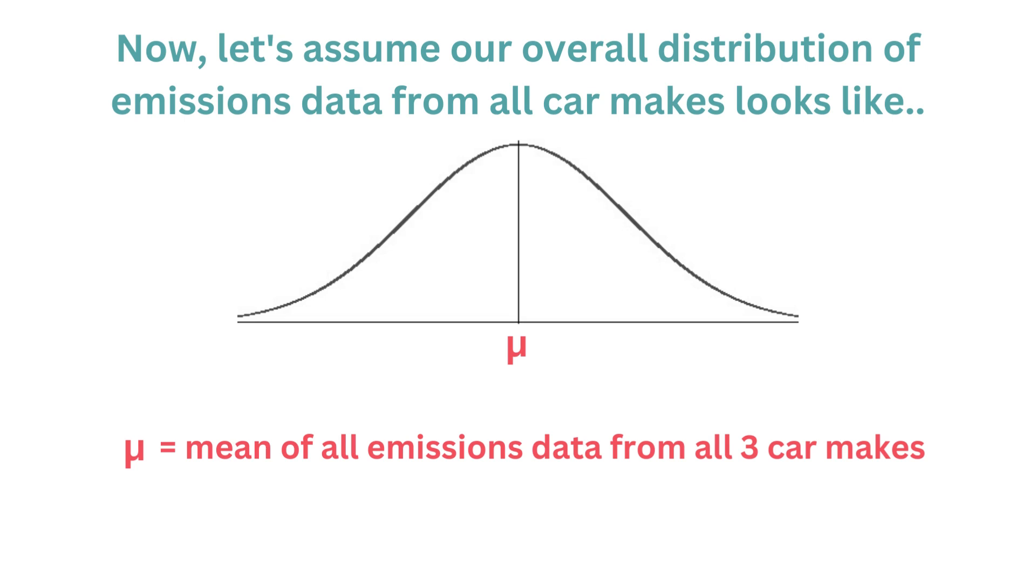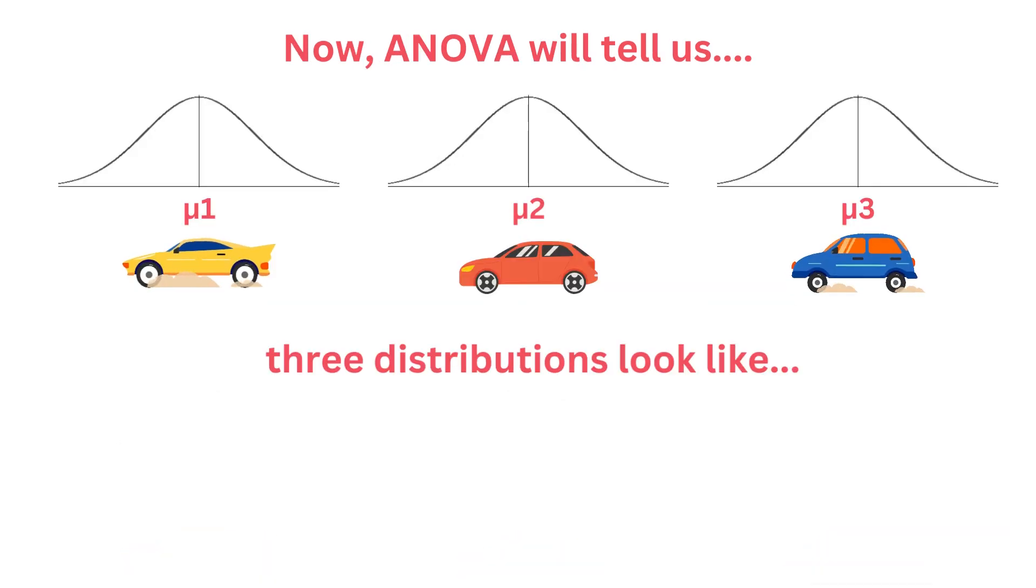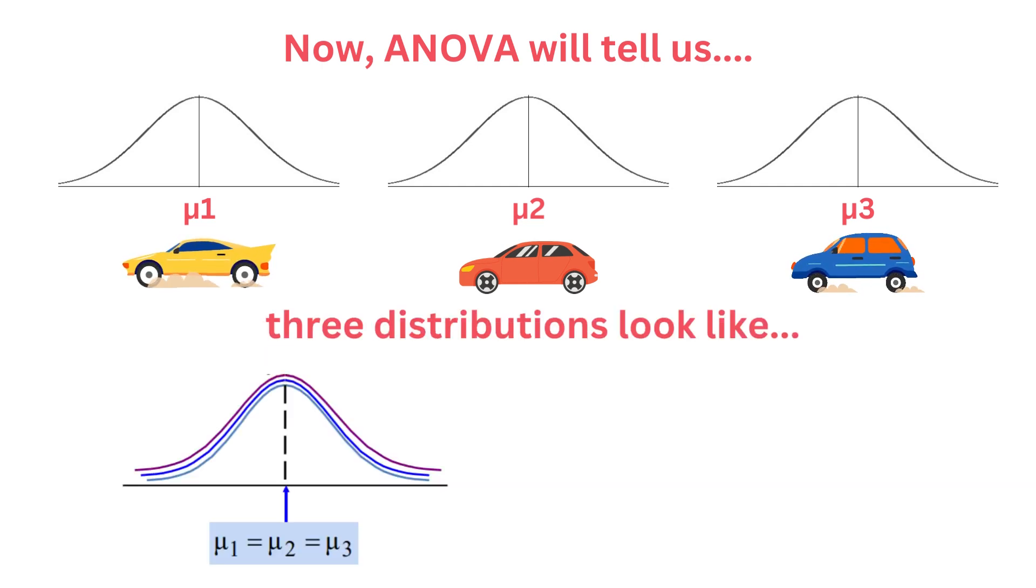Let's assume our overall distribution of emissions data from all car makes - it will look something like this, where mu is the mean emission from all the cars of all three makes. In other words, it's a global mean. And the distribution for each of the car makes look something like this. Now ANOVA will tell us whether these three distributions look like this or this. Which one is true?